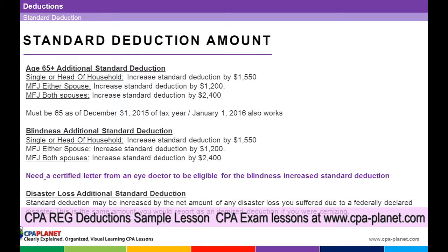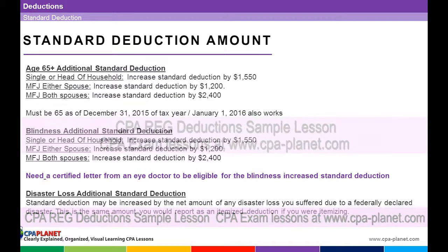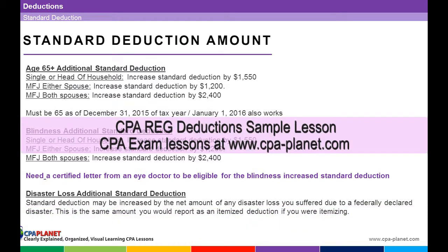You need a certified letter from an eye doctor for the blindness deduction. And finally, disaster loss — you can increase your standard deduction by a disaster loss due to a federally declared disaster, such as Hurricane Sandy. The additional deduction is the same amount you would report as an itemized deduction.